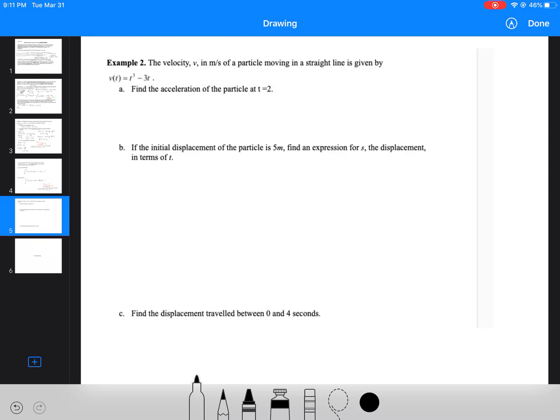The last example is about a particle moving in a straight line, and its velocity is given by v(t) equals t cubed minus 3t. The first question is asking us to find the acceleration of the particle at t equals 2. We know that acceleration is the derivative of velocity, and we can find that equation fairly easily.